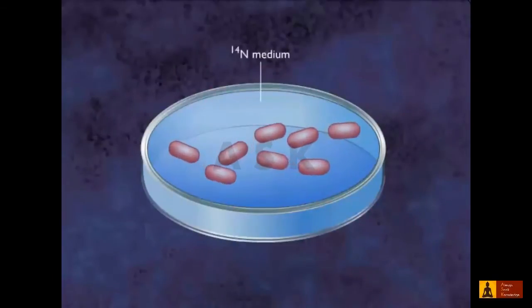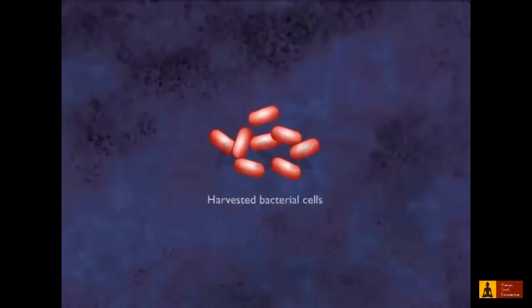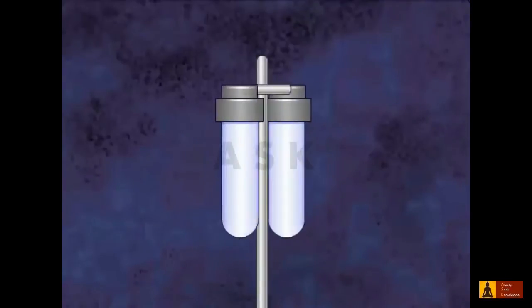At various times after the transfer, samples of the bacteria were collected. The DNA was then extracted and dissolved in a solution of cesium chloride. The samples were then spun rapidly in a centrifuge.